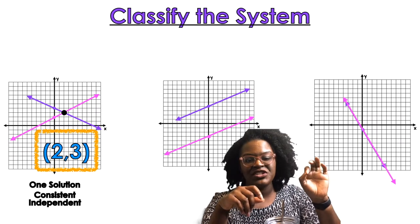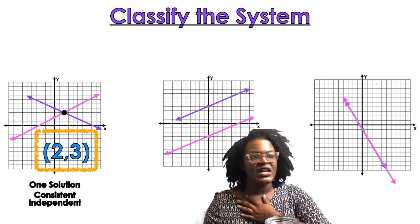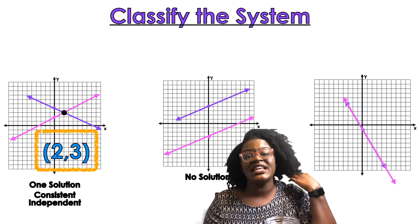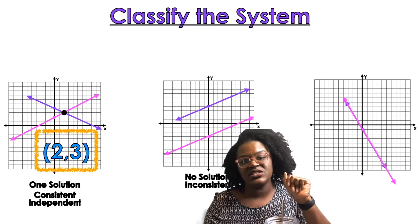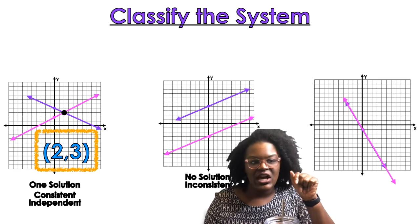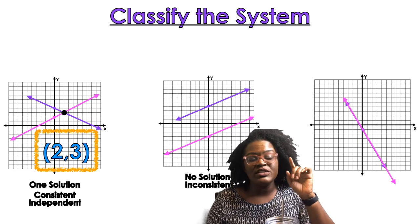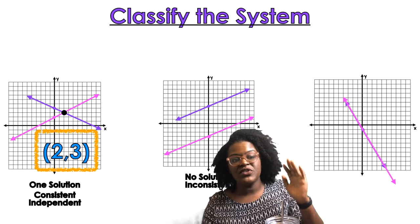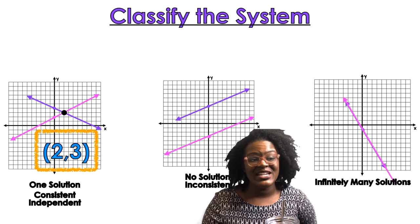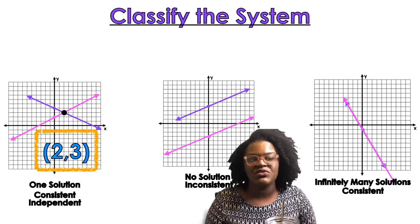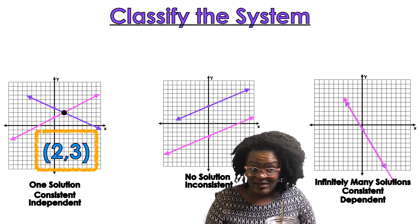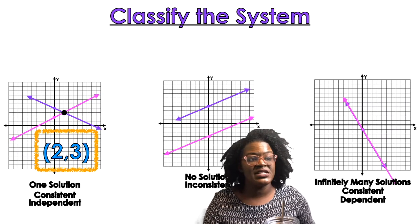If it has no solution — parallel lines — then that is an inconsistent system, period. Nothing more, nothing less. And for the third example, notice that both lines are right on top of each other — that's infinitely many solutions. Because it does have a solution, I say it is consistent, but it's dependent. So your three options are: consistent independent, consistent dependent, or inconsistent.